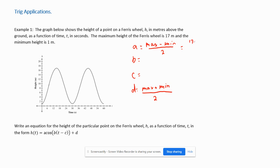Applying these formulas: a = (17 − 1) / 2 = 16 / 2 = 8. Our d value is (17 + 1) / 2 = 18 / 2 = 9. Our b value is 2π over the period.